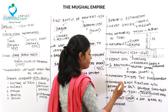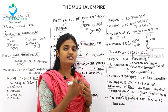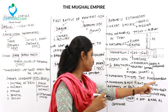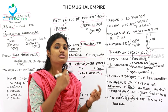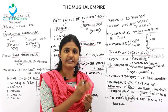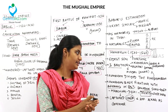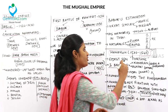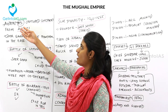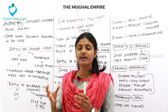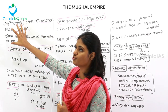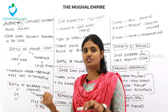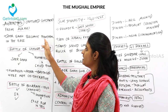Humayun was busy fighting the Afghans in the east. Meanwhile, Bahadur Shah of Gujarat was marching towards Delhi. Humayun concluded a treaty with Sher Shah (also known as Sher Khan) in the east, then came back and captured Gujarat, appointing his brother Askari as governor. But Bahadur Shah later recaptured Gujarat from Askari. In the meantime, Sher Shah became powerful in the east.